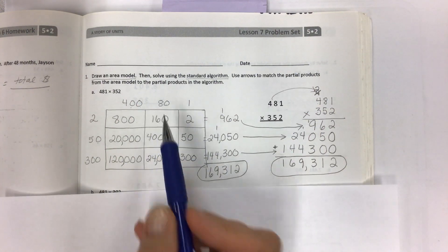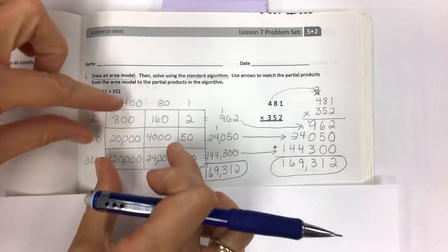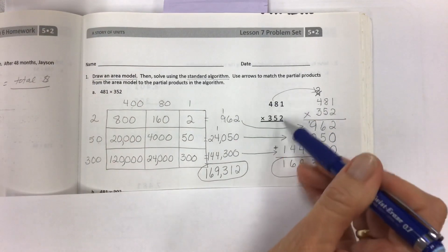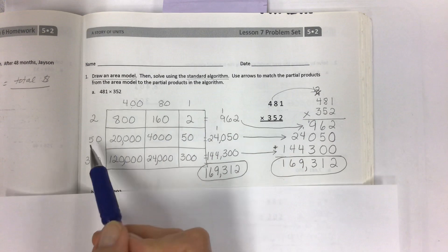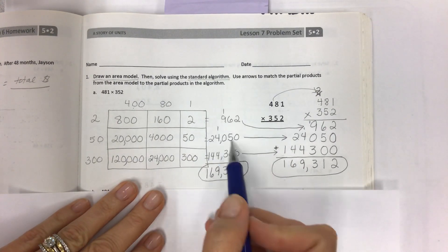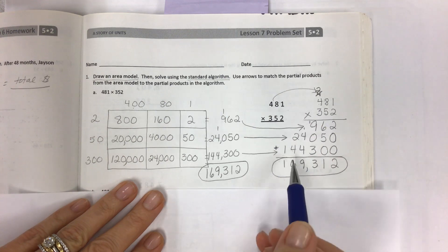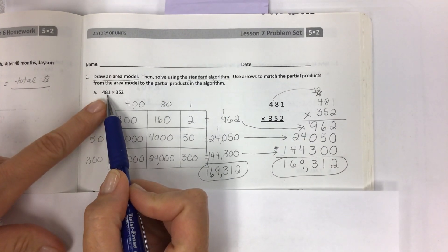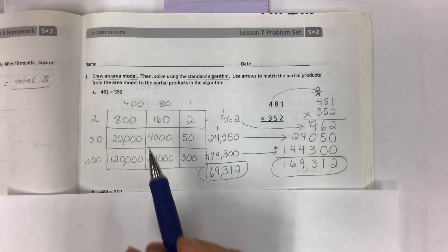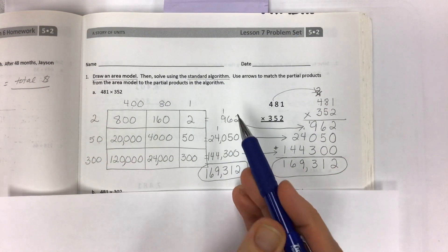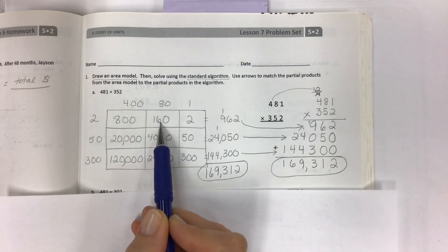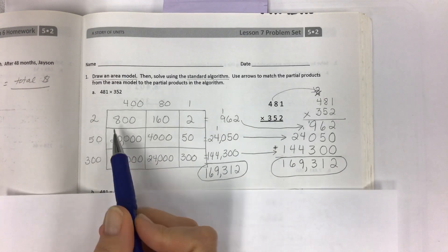So in the future you might, if you create your own area model and you're writing the problem yourself, if you mix these two up you might panic when you see that your partial products don't actually add up to these. So notice that this is first, it's on top and it is also the top factor.